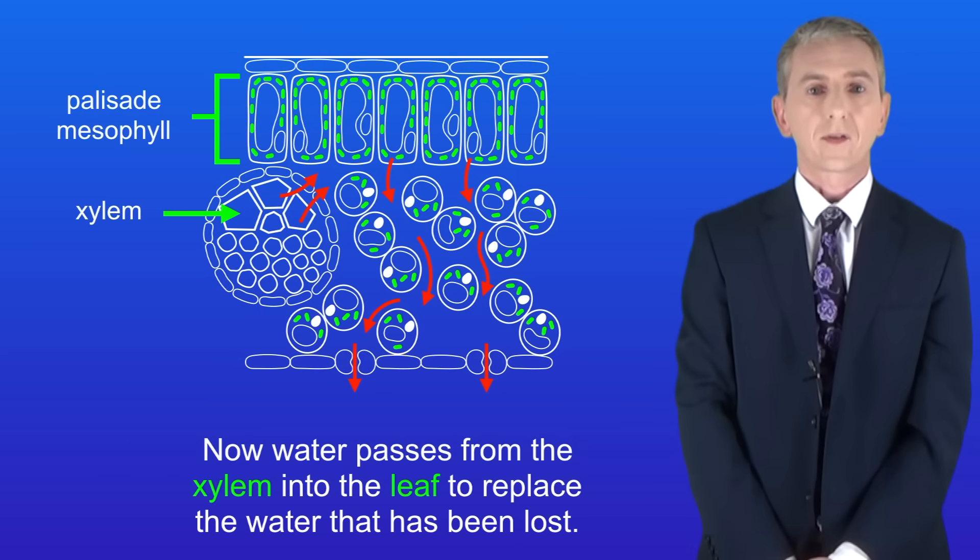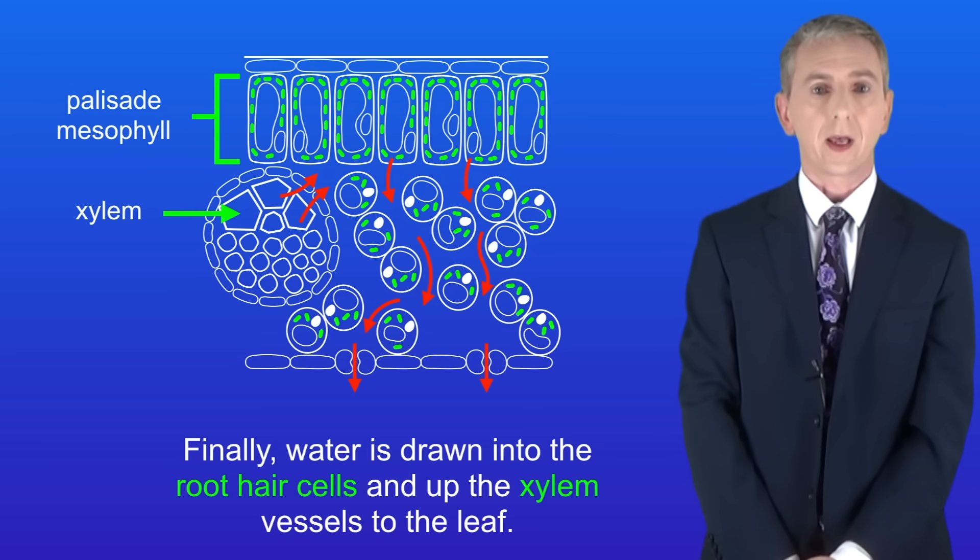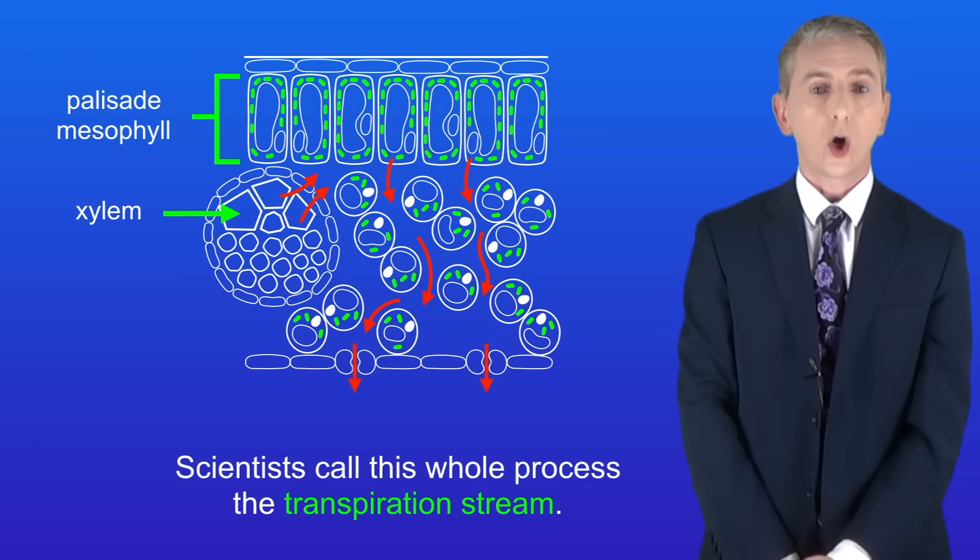Water passes from the xylem into the leaf to replace the water that's been lost, and water is drawn into the root hair cells and up the xylem vessels to the leaf. Scientists call this whole process the transpiration stream.